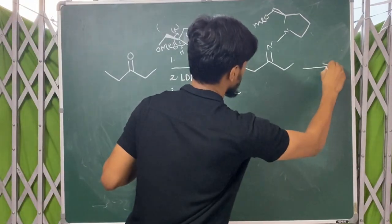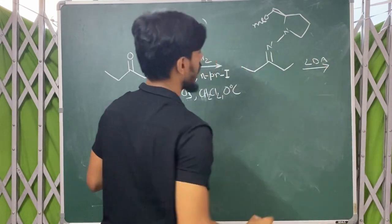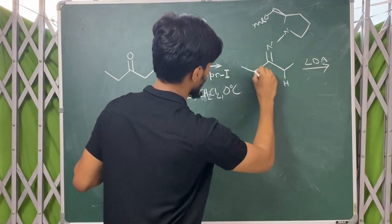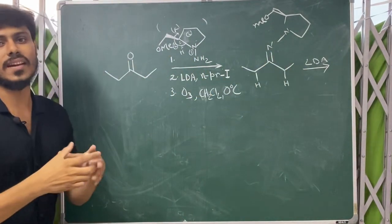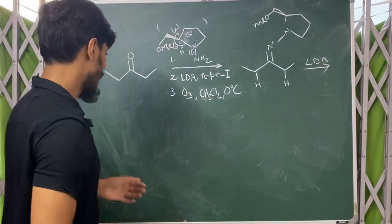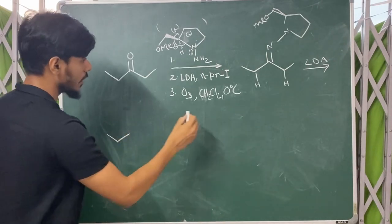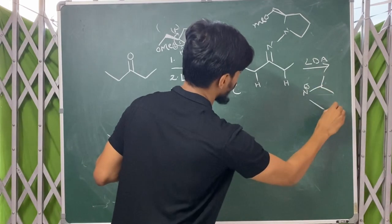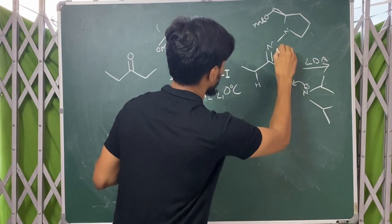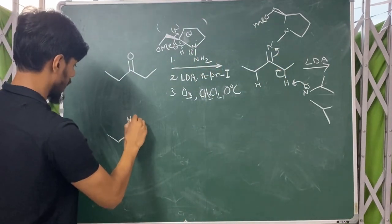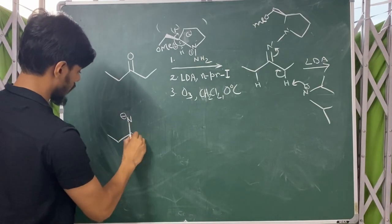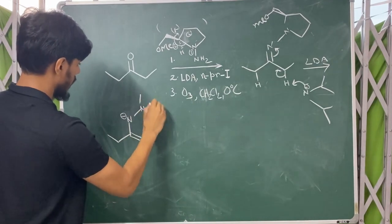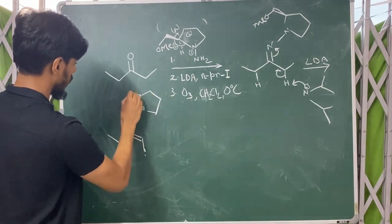In the next step, LDA (lithium diisopropyl amide), a very strong base, will deprotonate from either of these centers — basically these two sides are the same. So it can take a proton from any of these two centers, and that will give you an azaenolate. It will form an azaenolate with N-minus and here you will have a double bond.